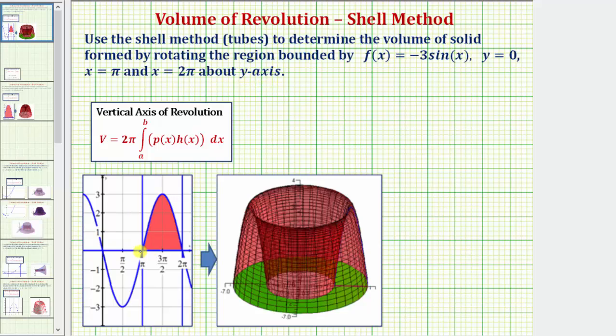Looking at this graph in the lower left, we should recognize that f(x) equals negative three sine x would be the sine function with an amplitude of three reflected across the x-axis, which should be this graph here. Y equals zero is the x-axis. X equals pi is the vertical line here passing through pi on the x-axis, and x equals two pi is this vertical line passing through two pi on the vertical axis. So this shaded region is the bounded region.